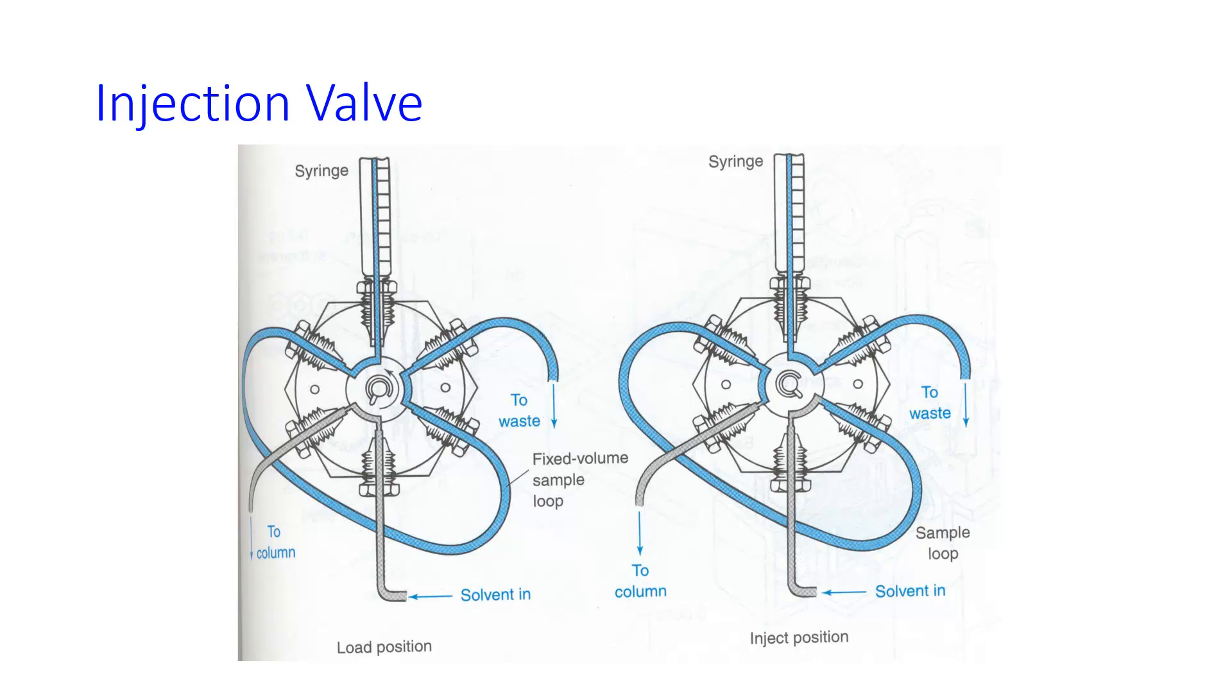So the injection valve is where your sample gets introduced into the instrument. And injection valves have two positions, the loading and the injecting position. In the loading position, the syringe is connected to an injection loop, or a sample loop, that has some volume. They have all different volumes. And when you inject, you fill up the sample loop, and then put a little extra in until you see drips coming out of the drain where it says to waste. That's how you know your sample loop is full.